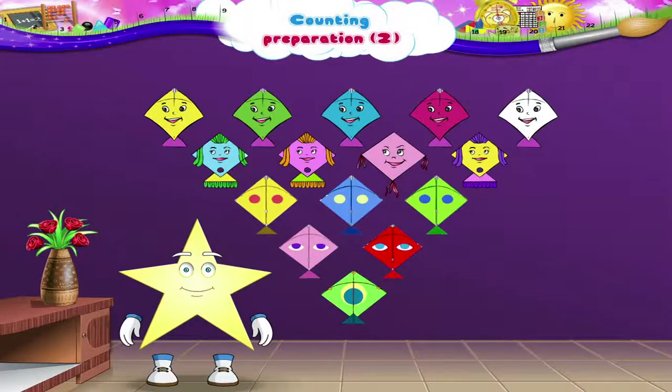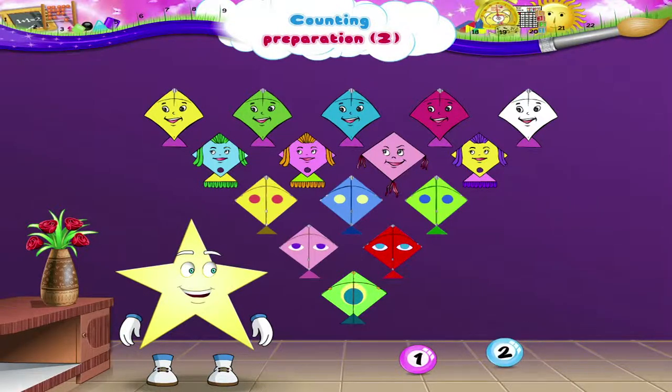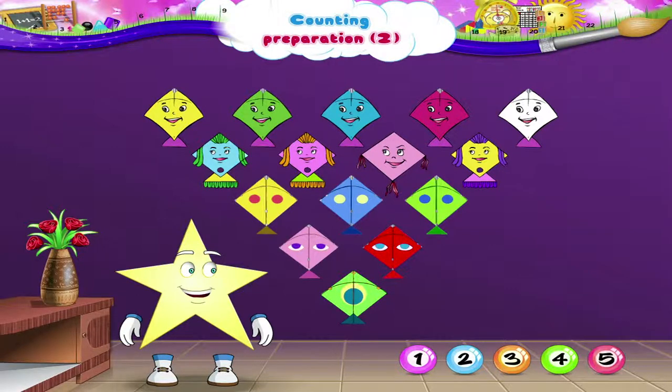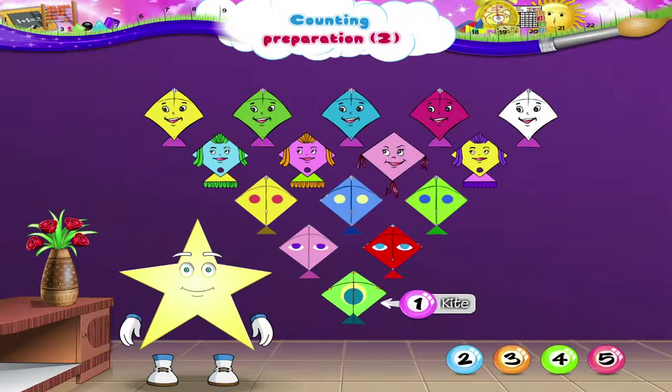Let us take the help of our number friends. That is 1, 2, 3, 4 and 5. Come, let us begin counting. We start counting from 1. 1, this is 1 kite.